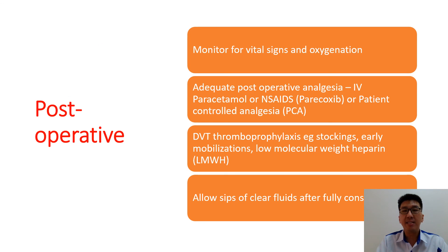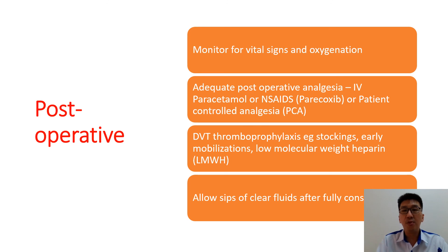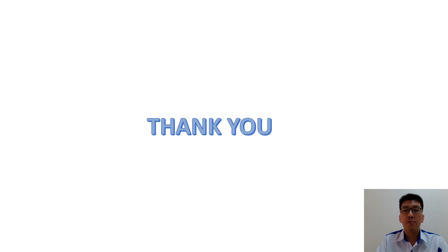Postoperatively, if needed, we may consider admitting the patient to the intensive care unit. Otherwise, we should monitor the patient's vital signs such as blood pressure, heart rate, and oxygen saturation. Ensure the mother has good postoperative analgesia; we can consider paracetamol, parecoxib, or patient-controlled analgesia. DVT thromboprophylaxis with stockings or early mobilization is encouraged. Allow sips of clear fluids once the patient is fully conscious in the ward. With this, I would like to thank all of you for your attention and time for this chapter of my presentation.